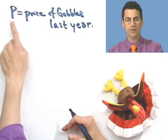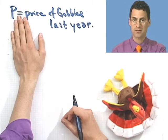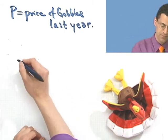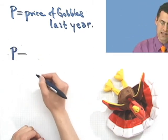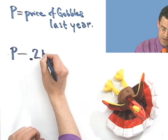Now what do I know about the price of Gobbles this year? I actually know two pieces of information. The first one is the price is $750. But the second thing I know about the price is that it is 20% less than the price it was previously. It means that the price fell 20%, so I'm going to subtract something from this price — 20% of this price.